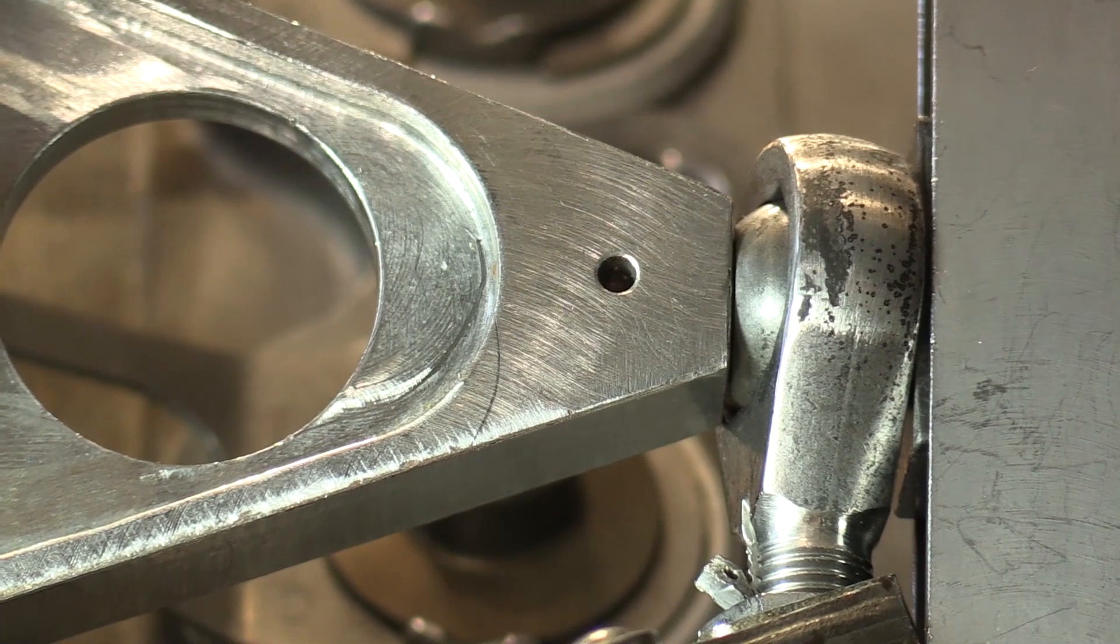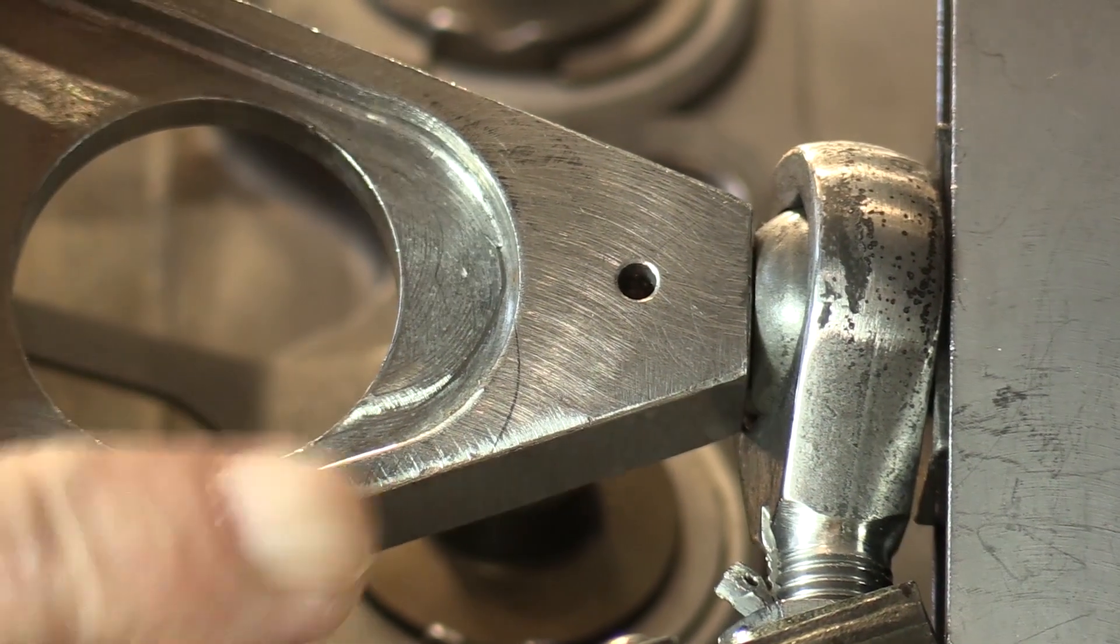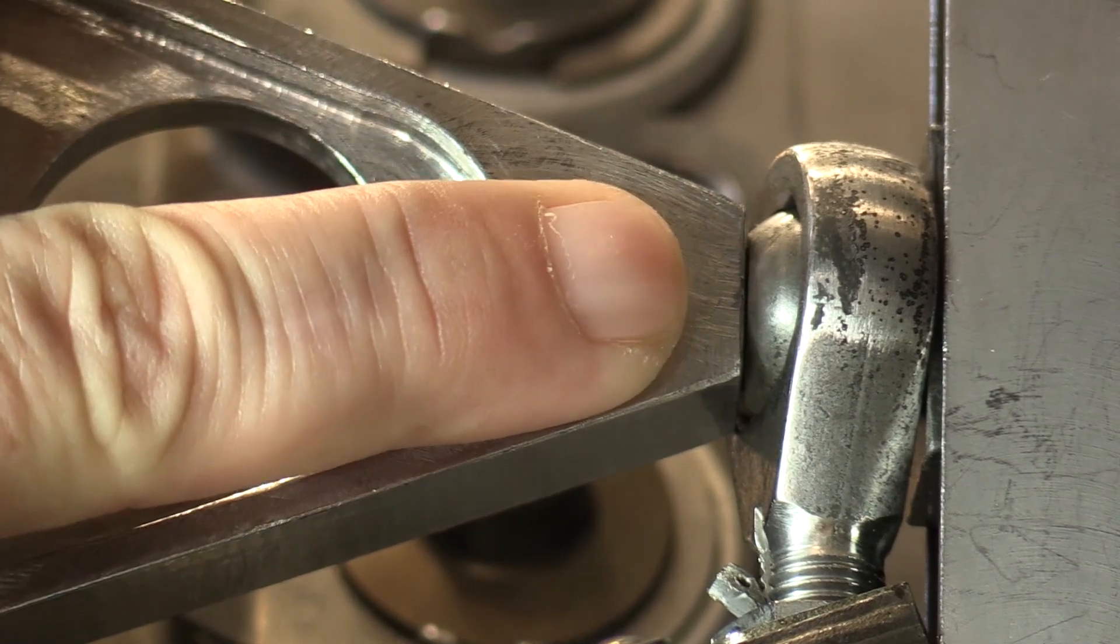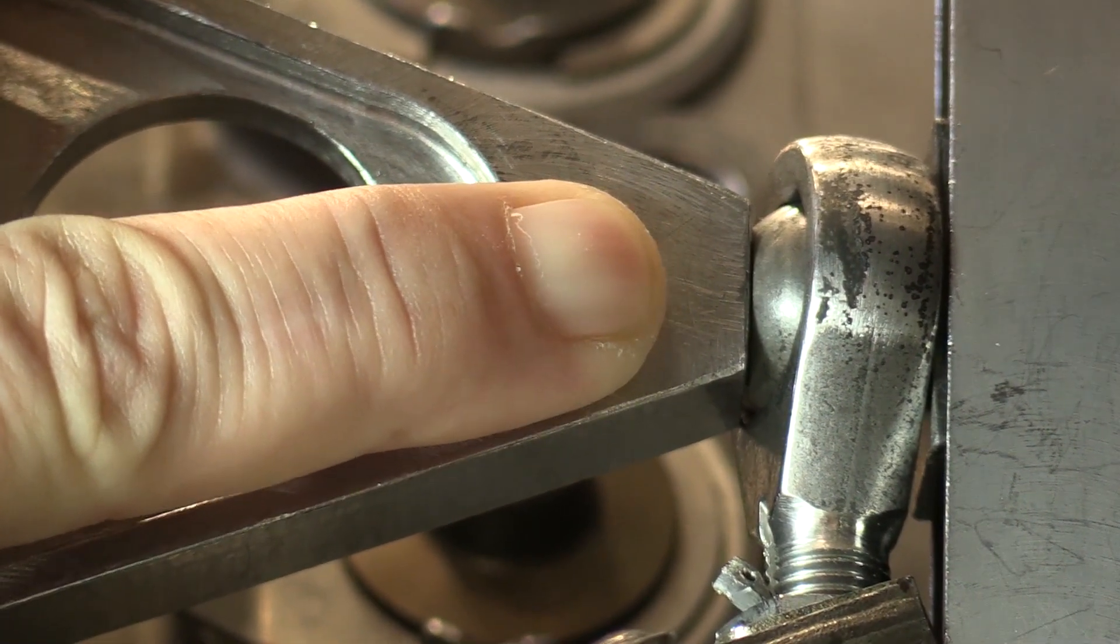Okay, here we are looking at one of the VSV actuator rod ends. What we're really concerned with is the spherical bearing here in the rod end attaching it to the master lever arm of the VSV system.